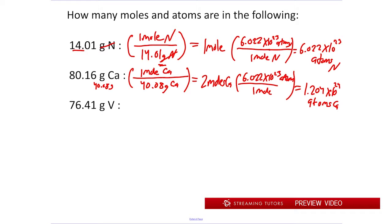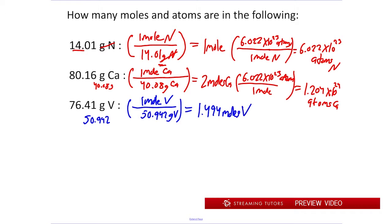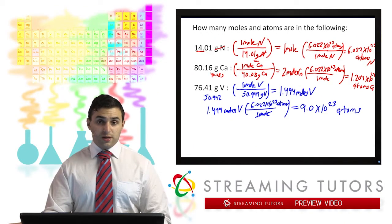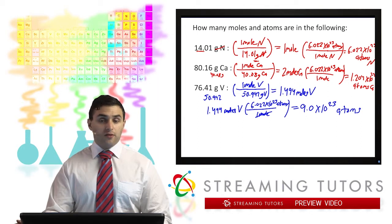And then finally for vanadium, vanadium has an atomic mass of 50.942. We do the same thing: one mole of vanadium contains 50.942 grams. Doing that calculation, we get 1.494 moles of vanadium. Next we convert that into atoms by multiplying by Avogadro's number, and we're left with 9.0 times 10 to the 23rd atoms of vanadium in that sample. Doing this is going to be extremely important in the future — converting from grams to moles and back from moles to grams. Definitely take the time to practice and make sure you're able to do it without making any arithmetic errors.